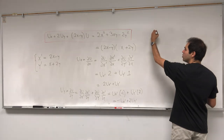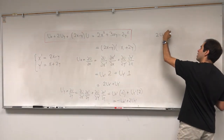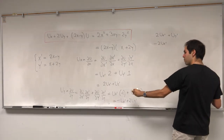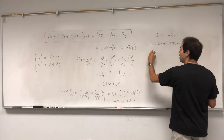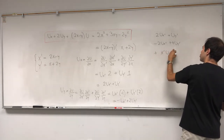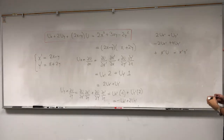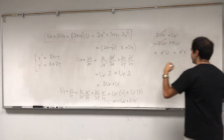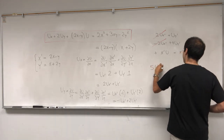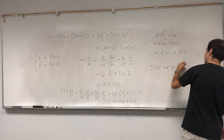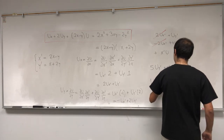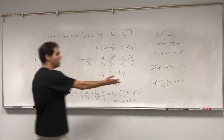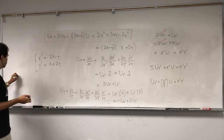Now notice those expressions are more complicated than ux and uy individually, but you'll see they actually simplify our PDE. Plugging in, we get 2 ux prime plus uy prime, plus 2 times (minus ux prime plus 2 uy prime), plus the x prime u term and the x prime y prime term. Those derivative terms cancel out, and what we're left with is sort of like an ODE in y prime: 5 uy prime plus x prime u equals x prime y prime. In other words, uy prime plus (x prime over 5) u equals x prime y prime over 5.